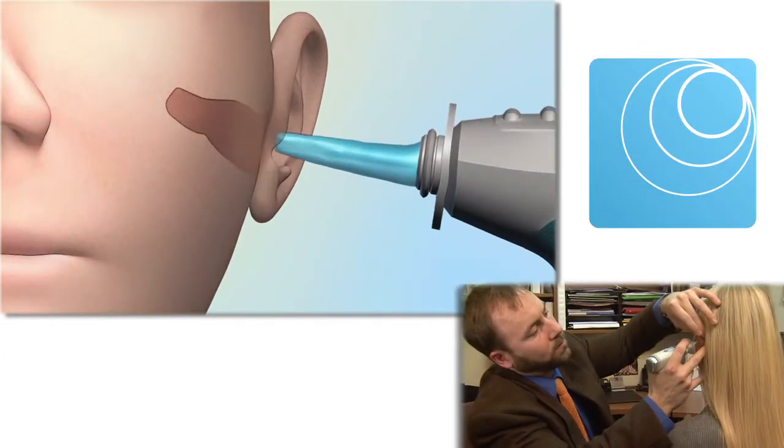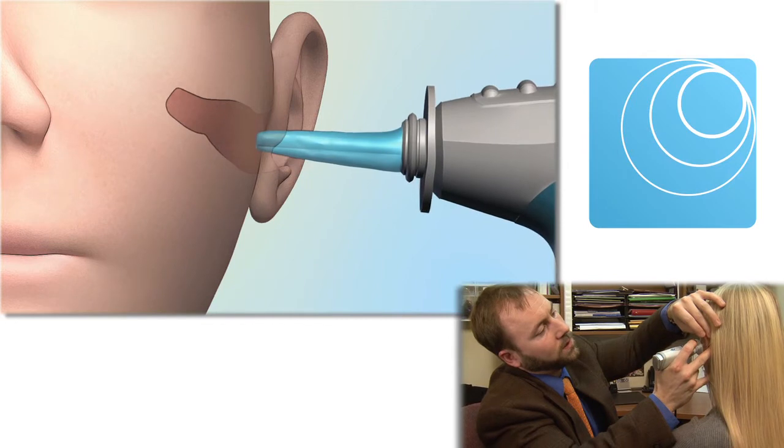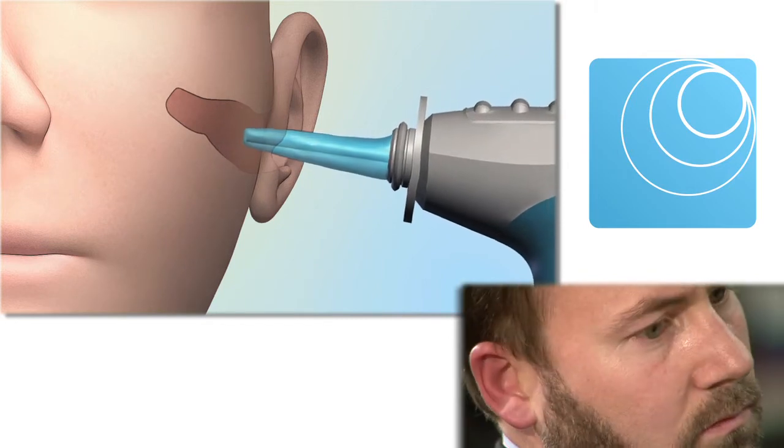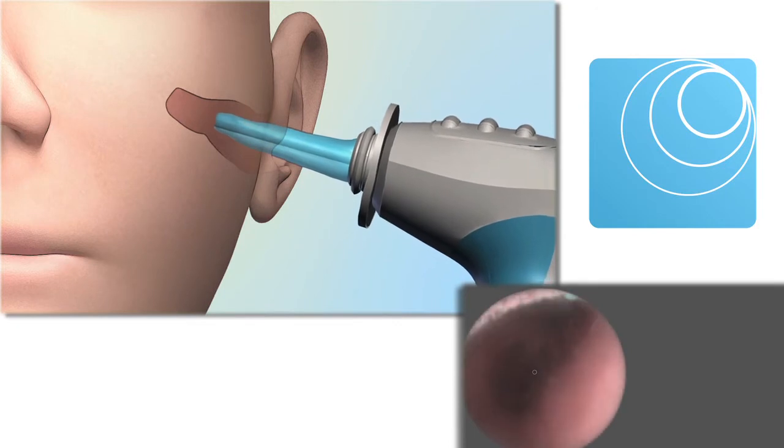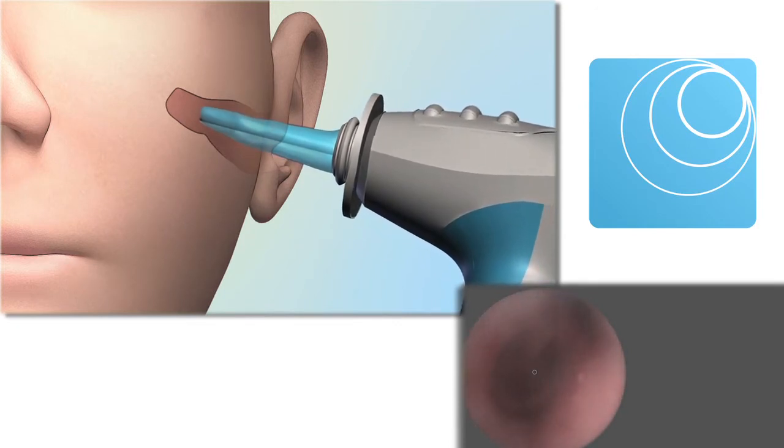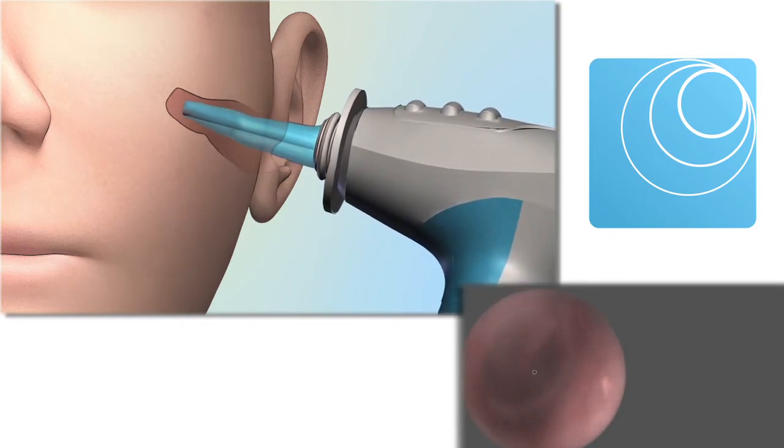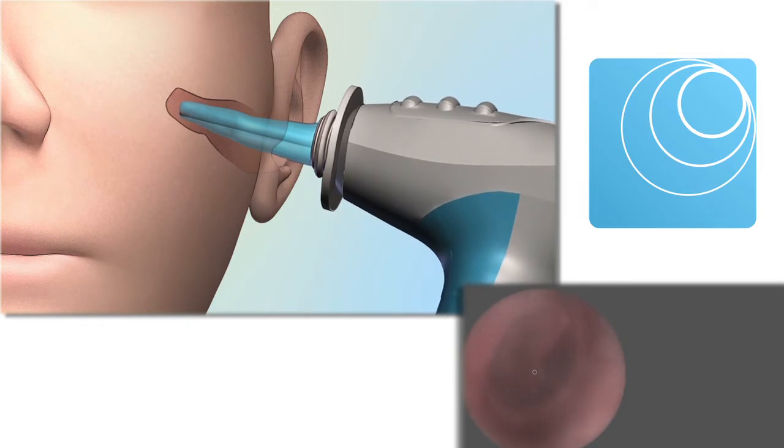The hearing professional prepares for the 3D scan by inserting the soft, conforming membrane in the ear canal guided by the video feed. High quality digital impressions, well beyond the second bend, are safely and easily achieved using the device.